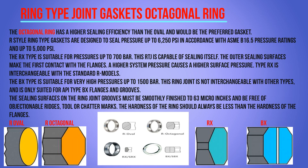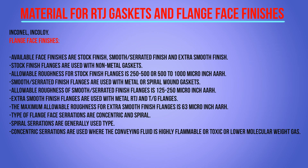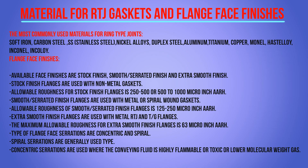The sealing surface on the ring joint grooves must be smoothly finished to 63 micro inches and be free of objectionable ridges, tool marks, or chatter marks. The hardness of the ring should always be less than the hardness of the flange material. The most commonly used materials for ring type joint gaskets are soft iron, carbon steel, stainless steel, nickel alloy, duplex, aluminum, titanium, copper, Monel, Hastelloy, Inconel, and Incoloy.